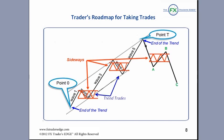Then we have our impulse waves — our trend waves — where we're going to be riding the trend. That would be waves one, three, five, A, and C.